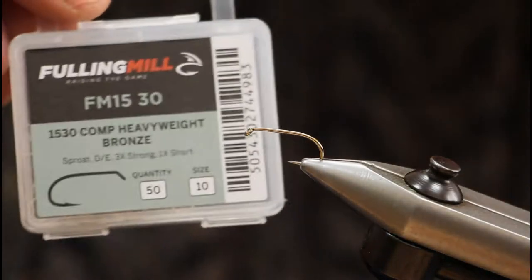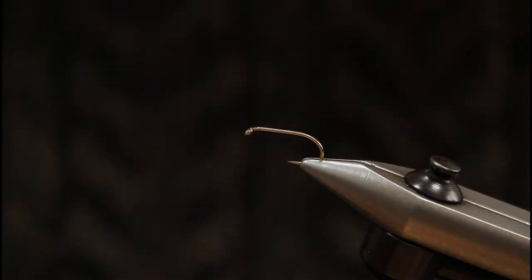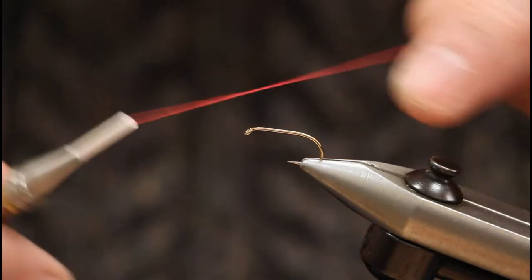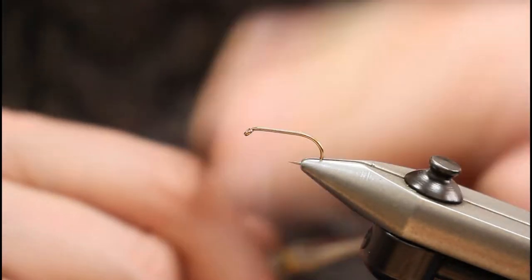In the vise we've got Fulling Mill Competition Heavyweight in a size 10, and I'm going to tie the whole fly with GB Floss No. 4.